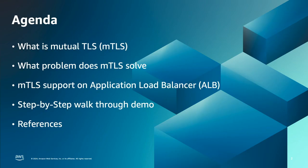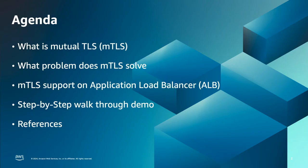The agenda for this webinar is: first we will discuss mutual TLS and then we will cover what problems it solves. Then go through mutual TLS support on application load balancer, or ALB, and what are the two supported modes. After that we will jump to the AWS console and implement mutual TLS on ALB, and finally we will wrap up the webinar with a few references.